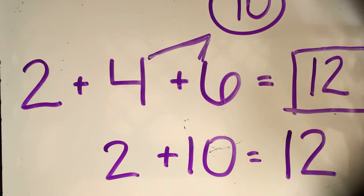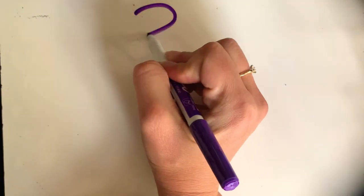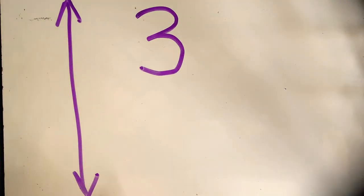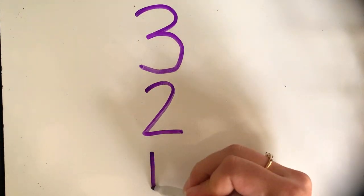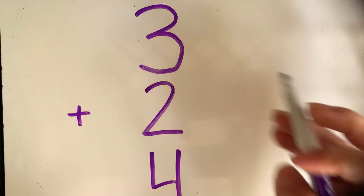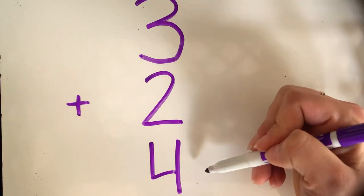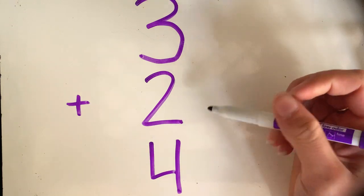So for number three and four, it's very similar, but the only difference is we are adding vertically. This time we're adding vertically, which means up and down. That's the only difference. We've got three plus two plus four. Now this time they're really throwing us some curveballs because there is no doubles fact here, and there is no numbers that equal ten. So what we're going to do is find the numbers that equal five.